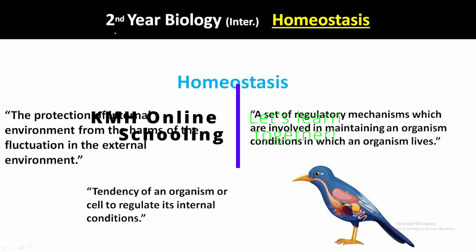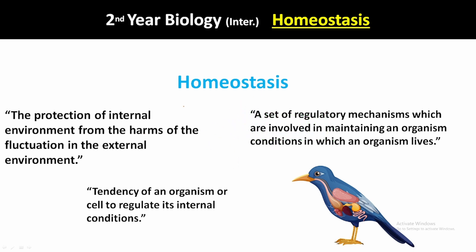Chapter number 15: Homeostasis. Today we are going to discuss homeostasis. The term homeostasis is derived from a Greek word meaning 'to stay same' — not to stay constant, meaning there are some variabilities and fluctuations, but to maintain the state. The definition: the protection of the internal environment from the harms of fluctuation in the external environment.